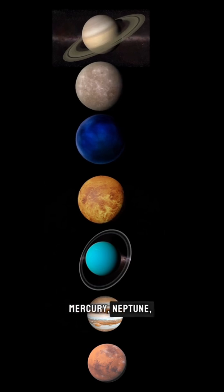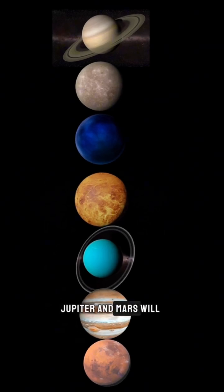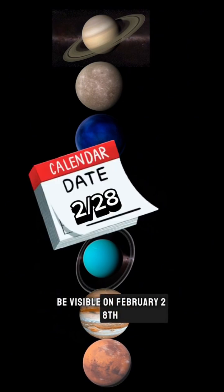Saturn, Mercury, Neptune, Venus, Uranus, Jupiter, and Mars will be visible on February 28th for most of the world.